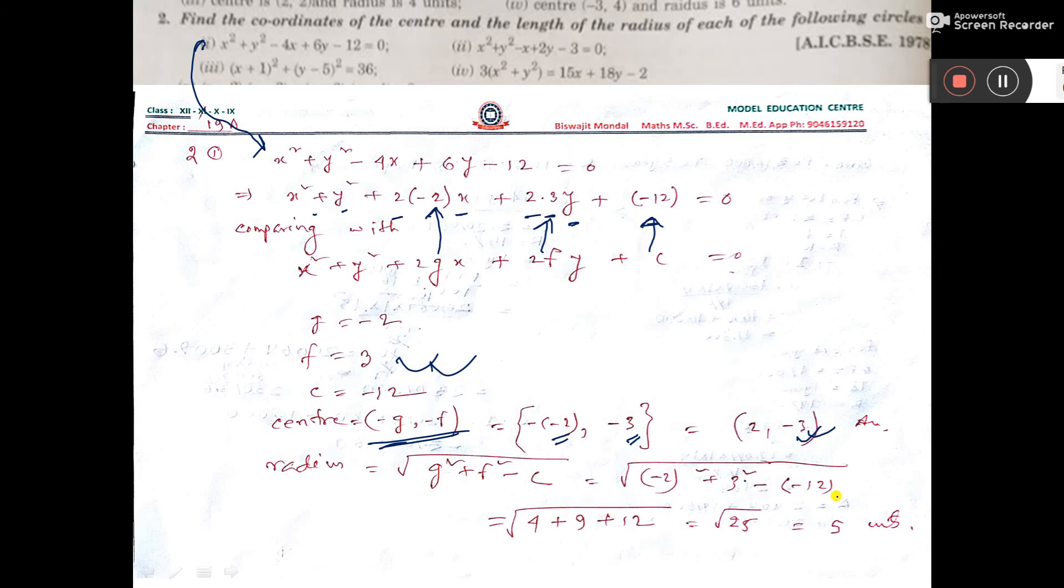So here minus minus 12. Now minus 2 into minus 2 that is 4. There will be 9. Here minus minus plus. So total is coming root over 25. That is 5 unit. This is the radius of the circle.